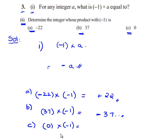We'll see the third bit: 0 into negative 1. We can see that when 0 is multiplied with any number it gives 0. Therefore, 0 times negative 1 equals 0.